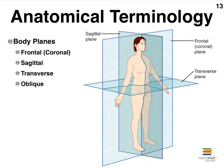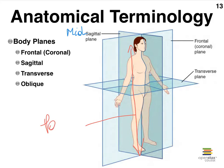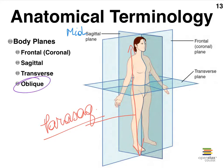Finally, the sagittal plane is going to cut a person such that it creates two halves — one half on this side and one half on the other. We cut right through the midline of the person to create what is called a mid-sagittal cut. If we made the cut away from the midline, we would refer to this as a parasagittal cut — so it doesn't always have to go right through the middle of the body or even an organ. The oblique cut, which is not illustrated here, would be a cut that runs at an angle.